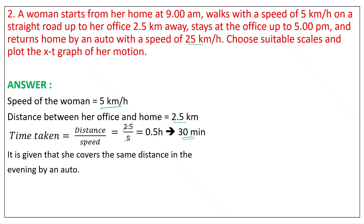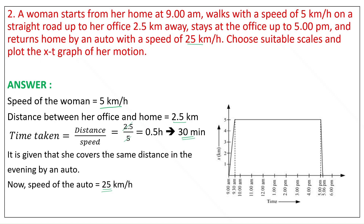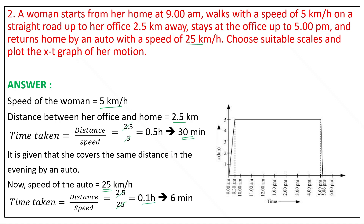Evening she left at 5 p.m. She covers the same distance of 2.5 km in the evening by an auto. Speed of the auto is equal to 25 km per hour. Therefore, time taken is equal to distance by speed, that is 2.5 by 25, equal to 0.1 hours, that is 6 minutes. Therefore, while returning by auto she took 6 minutes, reaching home at 5:06 p.m., as shown in the graph.